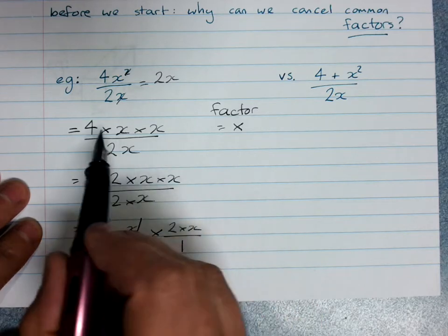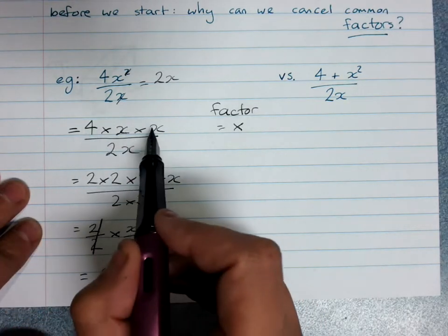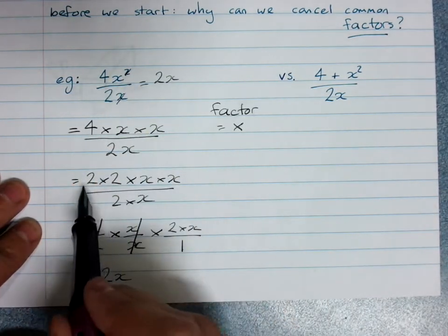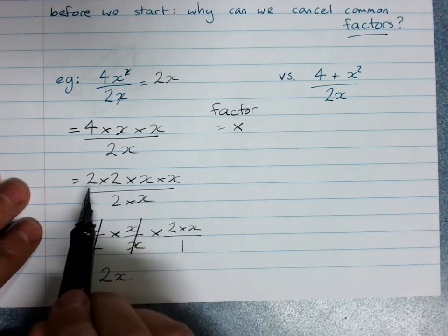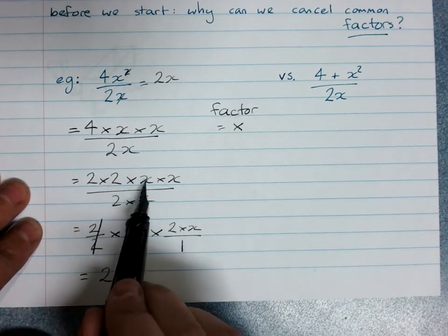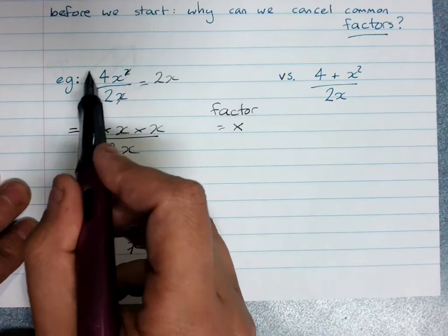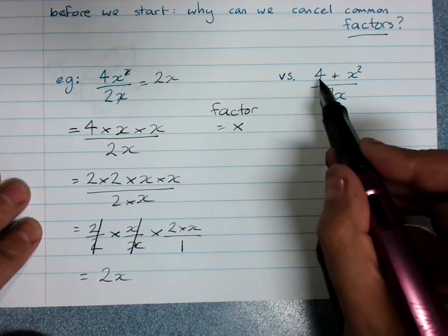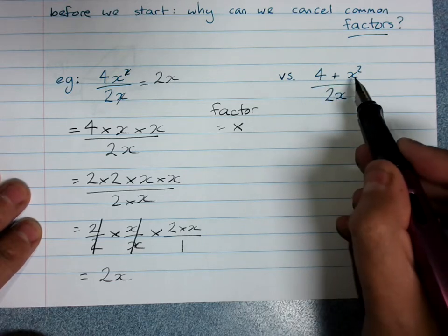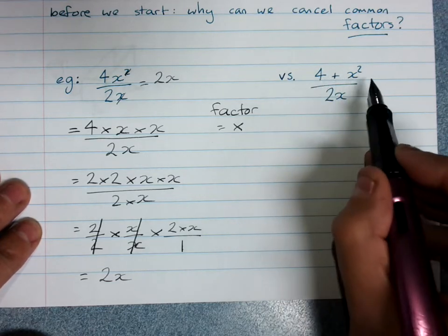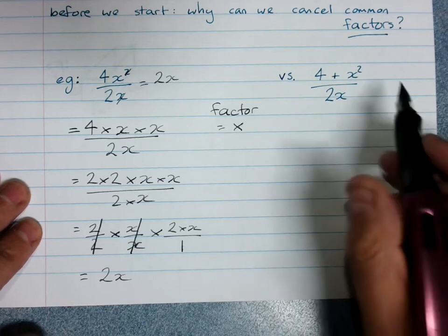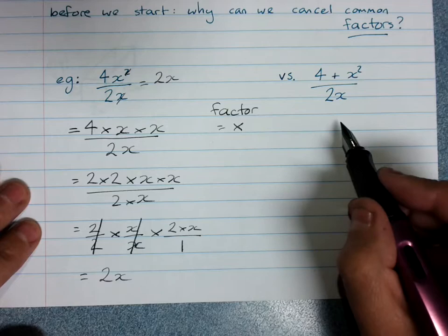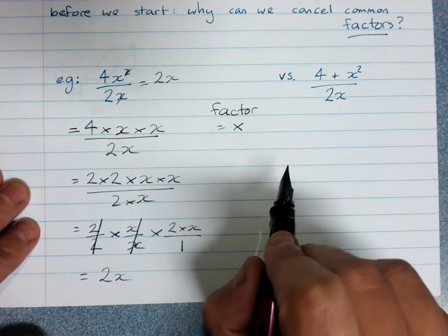Because x is a factor of 4x squared, 4 is a factor of 4x squared, and in fact, so is 2, because I can do 2 times 2 times x times x and get this whole expression or term. But I can't do 2 times anything to get 4 plus x squared. I can't write this as a multiplication where anything can be cancelled out.